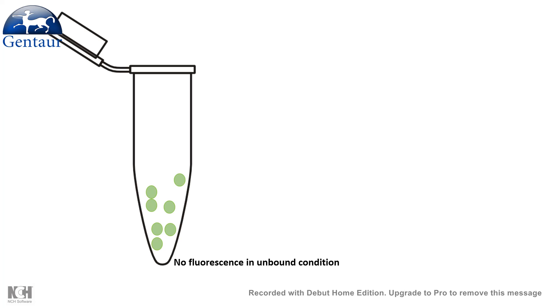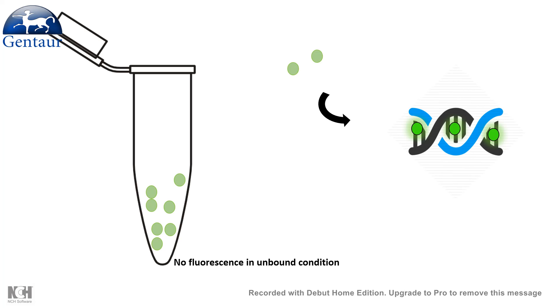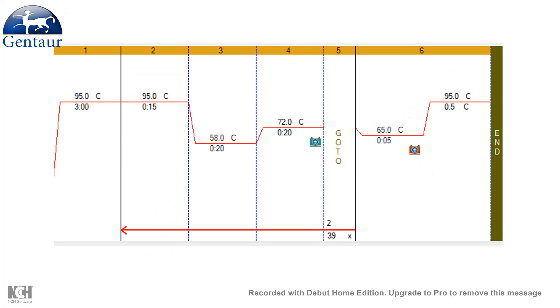The SYBR Green dye is a fluorescent dye which is not fluorescing when it is unbound to DNA. So in a situation when it is not bound to DNA, it is not fluorescent. But when it is bound to DNA, it would start fluorescing.